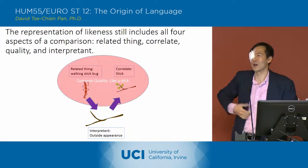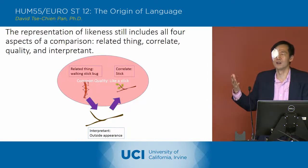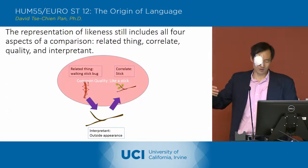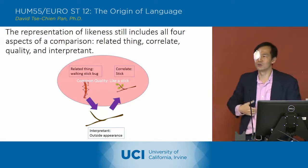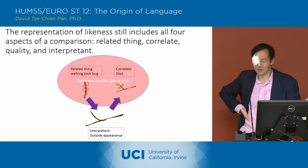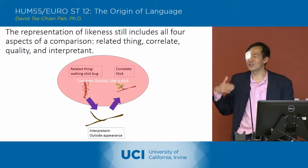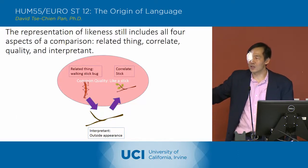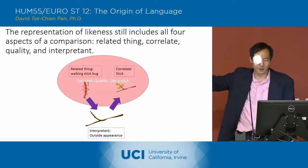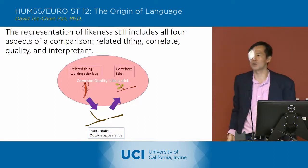The interpretant is really sort of outside appearance — that's the kind of way we're looking at the two things in order to determine the type of relationship they have. So all of those four things exist, even though the relationship of likeness is prescending from both the relationship of related thing to the correlate and from the interpretant.